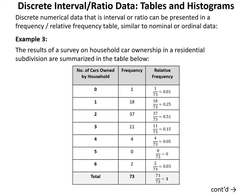Next we look at discrete interval or ratio data. In example three we have a survey of household car ownership in a residential subdivision. The number of cars owned ranges from 0 to 6, with frequencies listed in the second column totaling 73 households. The relative frequency is calculated by dividing each frequency by 73, and the sum of relative frequencies equals 73/73 = 1.